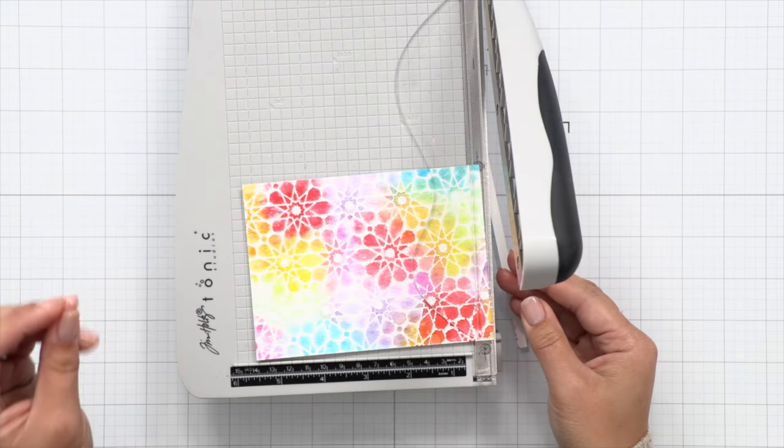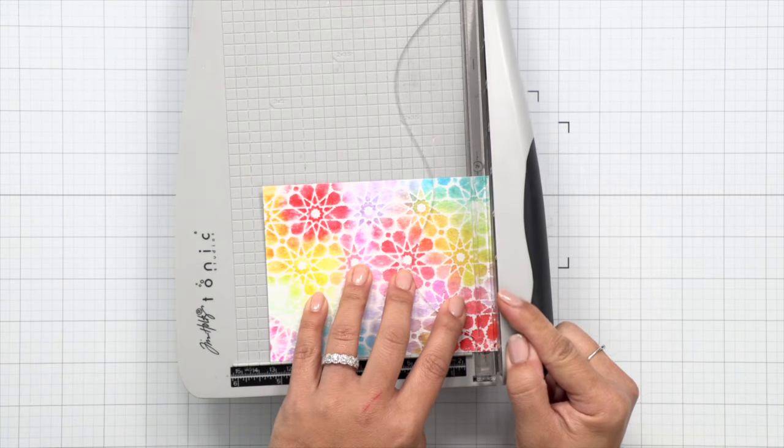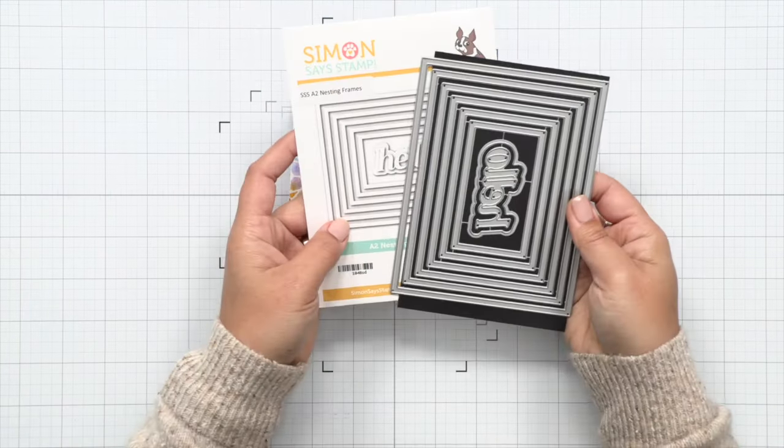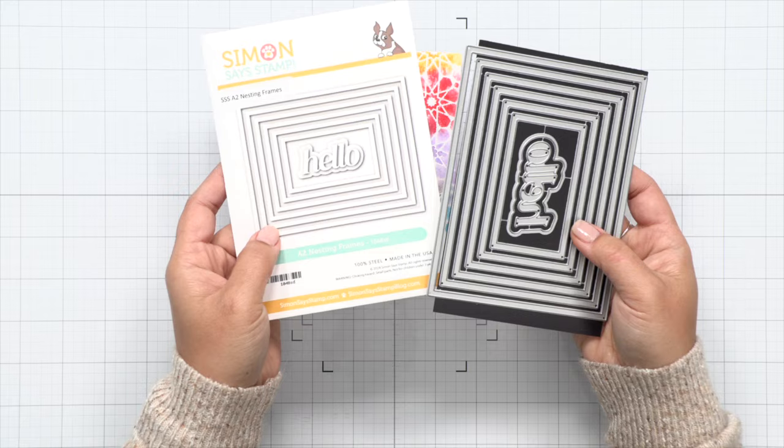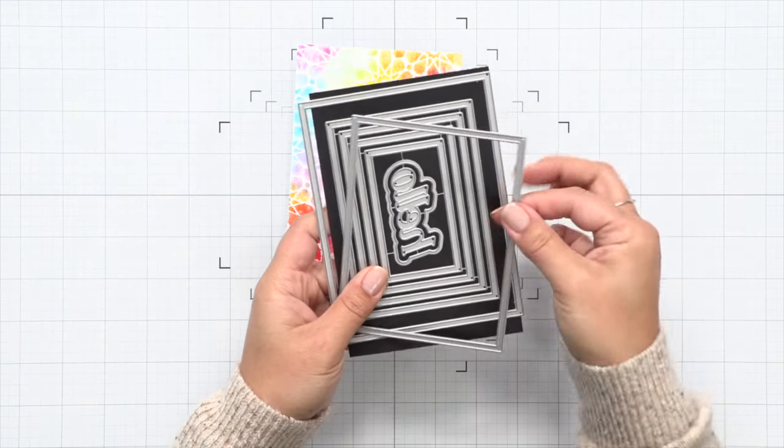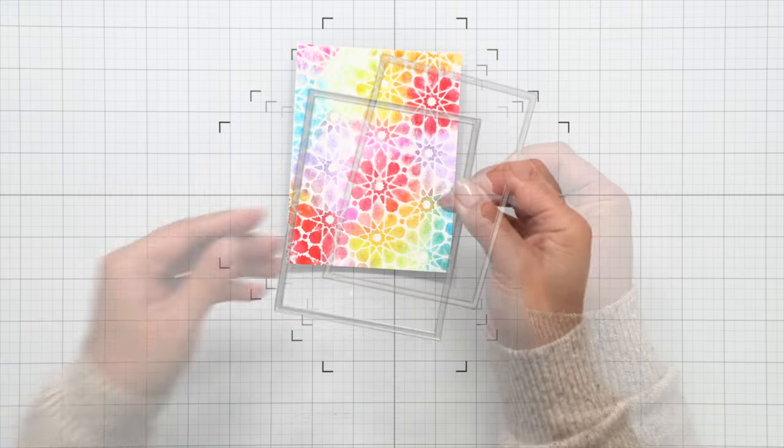Now to create a border I'm just going to cut off a quarter inch off two of the sides, so we're going to have a small mat on an A2 size card base. When I have a really full background like this, I like to add things to it that will break up the colorful and busyness of it.